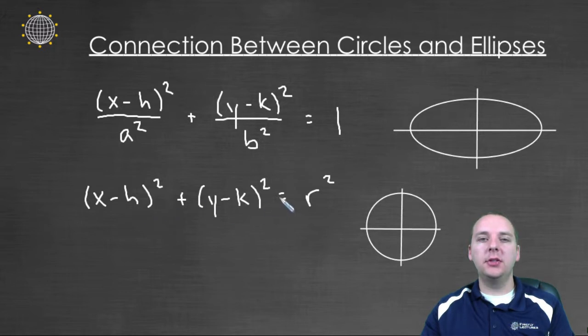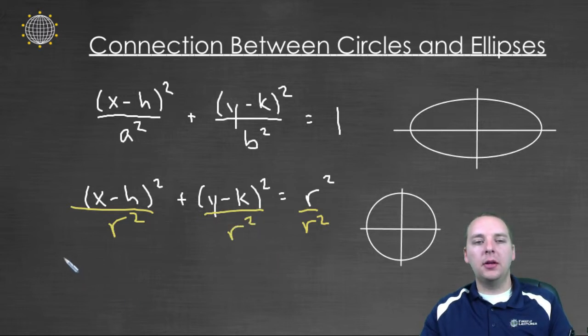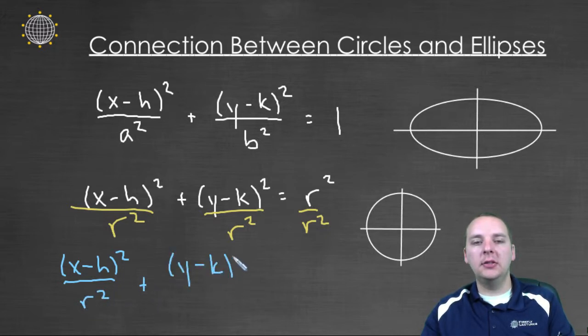If you start with the equation of a circle and you divide both sides by r squared, so we'll divide this side by r squared, and we'll divide this side by r squared, maybe we'll just divide each individual term by r squared. Then you would get, basically at the end of the day, x minus h squared over r squared plus y minus k squared over r squared equals one.